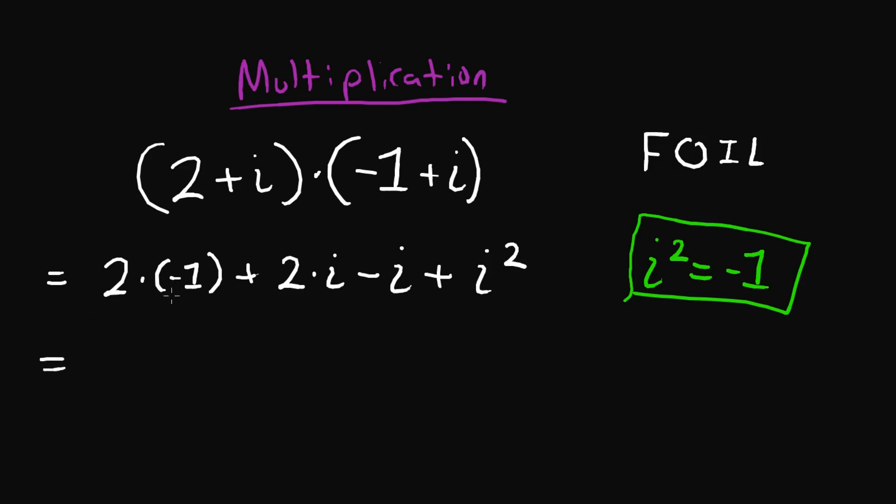So simplifying this, let's see. This is negative 2. Add these together, you get plus i. And then this is minus 1. So it looks like you end up with negative 3 plus i.